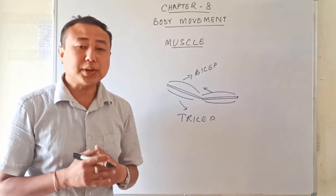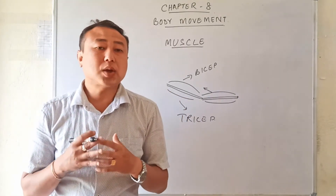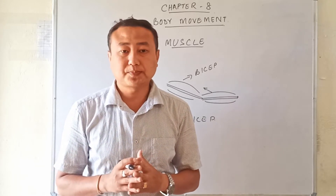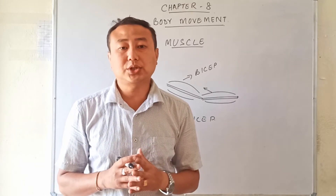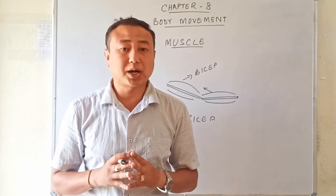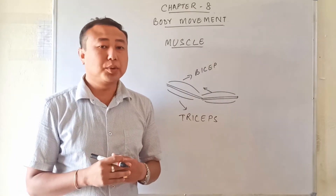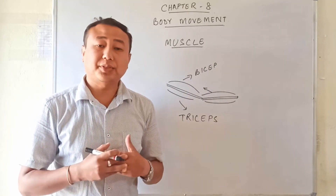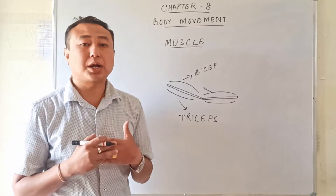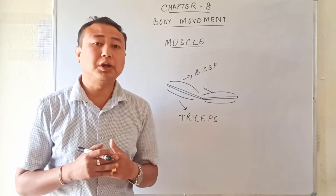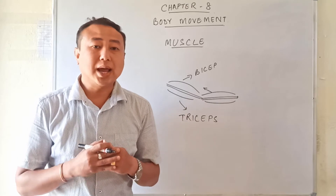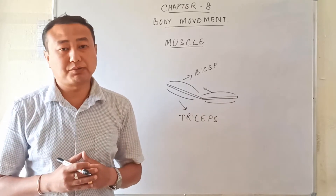So in this way, every part of our body has two sets of muscles. When one set contracts, the other set relaxes. The contraction and the relaxation of these two sets of muscles causes movement of different parts of our body. The muscles present in our body have only one ability — that is to pull other parts of the body. They are not able to push. They can only pull, and this pulling action helps in causing the movement of different body parts.